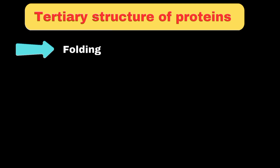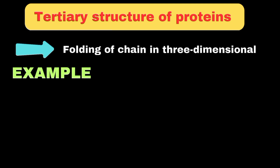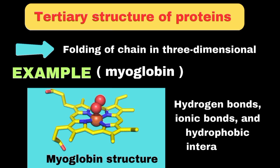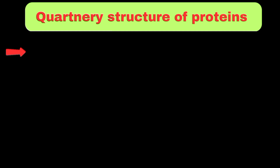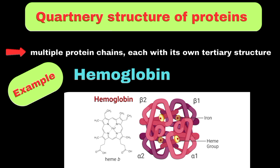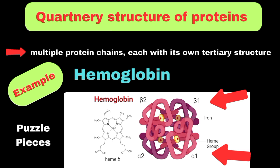The tertiary structure is formed when the protein chain folds into a specific three-dimensional shape. For example, myoglobin, a protein that stores oxygen in muscles, has a single chain that folds into a compact globe-like structure, with folding determined by interactions between side chains — including hydrogen bonds, ionic bonds, and hydrophobic interactions. The quaternary structure occurs when multiple protein chains, each with its own tertiary structure, come together. Hemoglobin is a perfect example, with two alpha chains and two beta chains that work together to carry oxygen in our blood, fitting together like puzzle pieces.